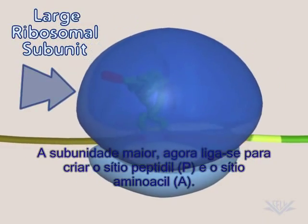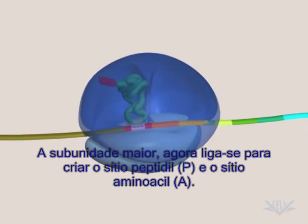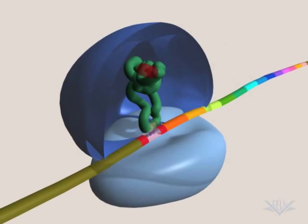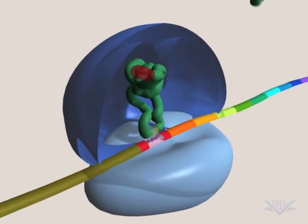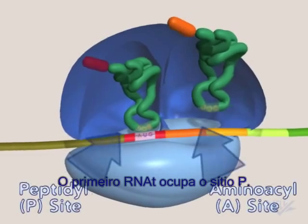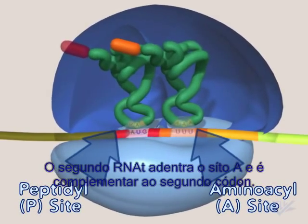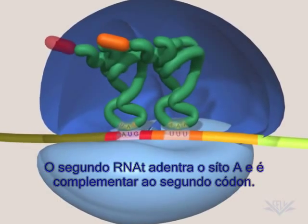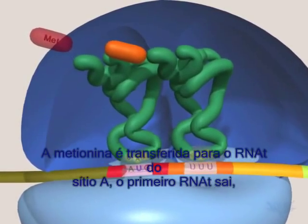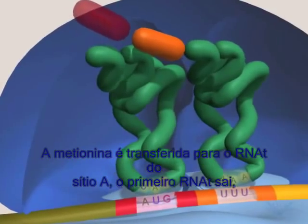The large subunit of the ribosome now binds to create the peptidyl, or P-site, and the aminoacyl, or A-site. The first tRNA occupies the P-site. The second tRNA enters the A-site and is complementary to the second mRNA codon. The methionine is then transferred to the A-site amino acid.